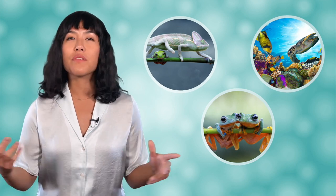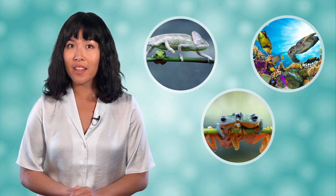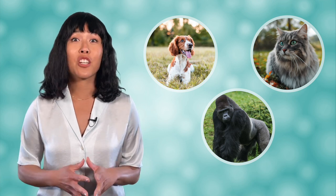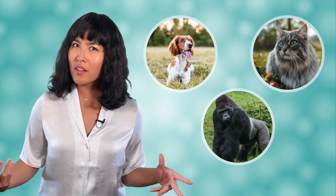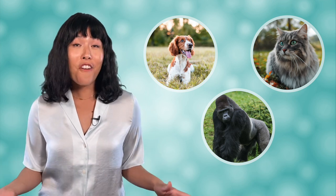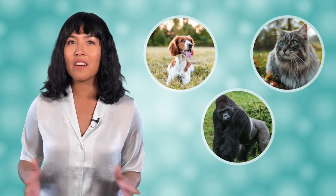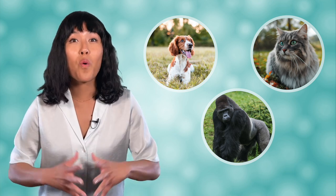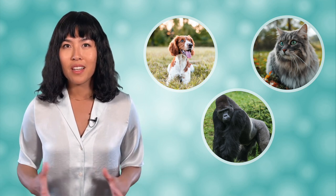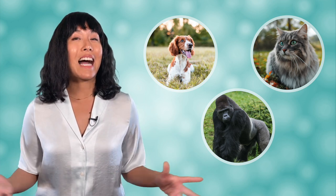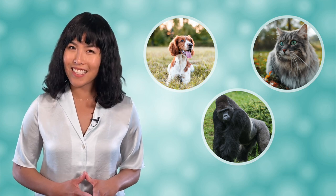Hello, Bee here and welcome back to biology. Think back to all of the animals we have discussed so far in this unit. Now, I want you to picture a dog, a cat, and a gorilla. What is the first difference you notice that dogs, cats, and gorillas have but all of the other animals lack? Fur. The presence of fur or hair is an important feature that is only present in mammals. Mammals, or animals in class Mammalia, are the topic of today's lesson.